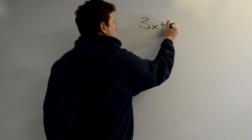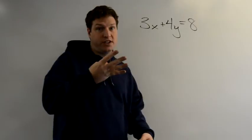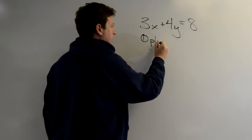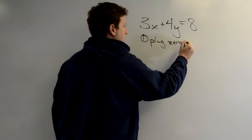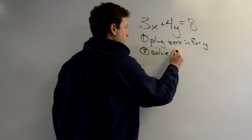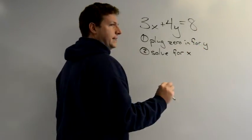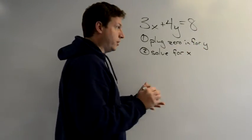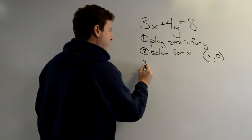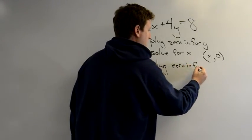I have my equation 3x plus 4y is equal to 8. And I want to talk about the four steps to get the two points we need out of this one. The first step is going to be plug 0 in for y. The second one, solve for x. So if you see what's going on here, we're actually plugging in 0 for y in order to get our x intercept. So we're going to have an x value here and a 0 for y.